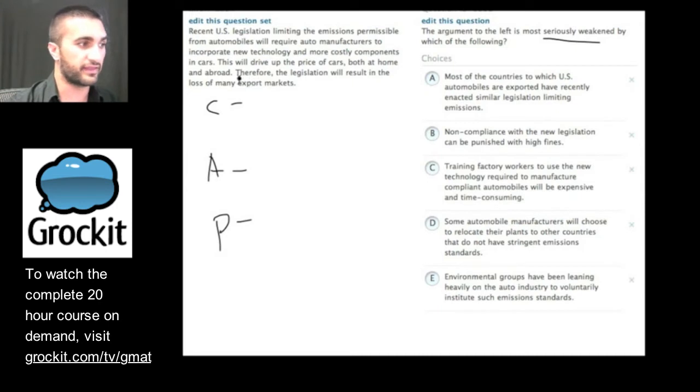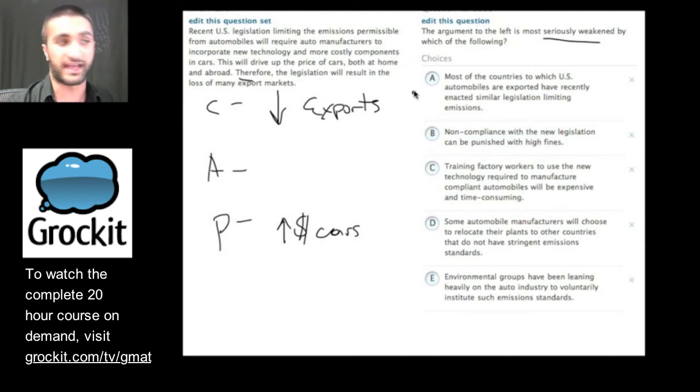So this is saying, therefore, legislation will result in the loss of exports. And the reason is that this new legislation will drive up the cost of the price of cars. And that will reduce the exports. So we want to find an answer choice that, remember, like we said, if we added it to the premise, would it make the argument weaker? So A, if in addition to the fact that the price of cars will go up, we also know that most countries to which U.S. automobiles are exported have recently enacted similar legislation, then it seems like their prices might go up too. I'm going to hold on to this. It seems like it might weaken the notion that exports will decrease because if other countries are experiencing a similar increase in the price of cars, it should all even out.